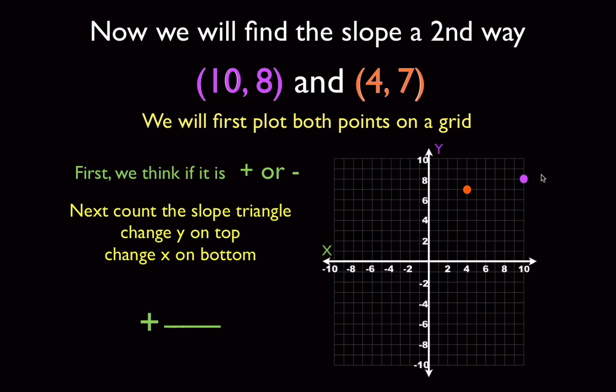Now we're going to go ahead, and we're going to count our slope triangle. Going left to up and down first, it only goes up 1. Going left to right, it goes 6. And you end up with a slope of 1 over 6. Since there's no simplifying to do, that means we're done.